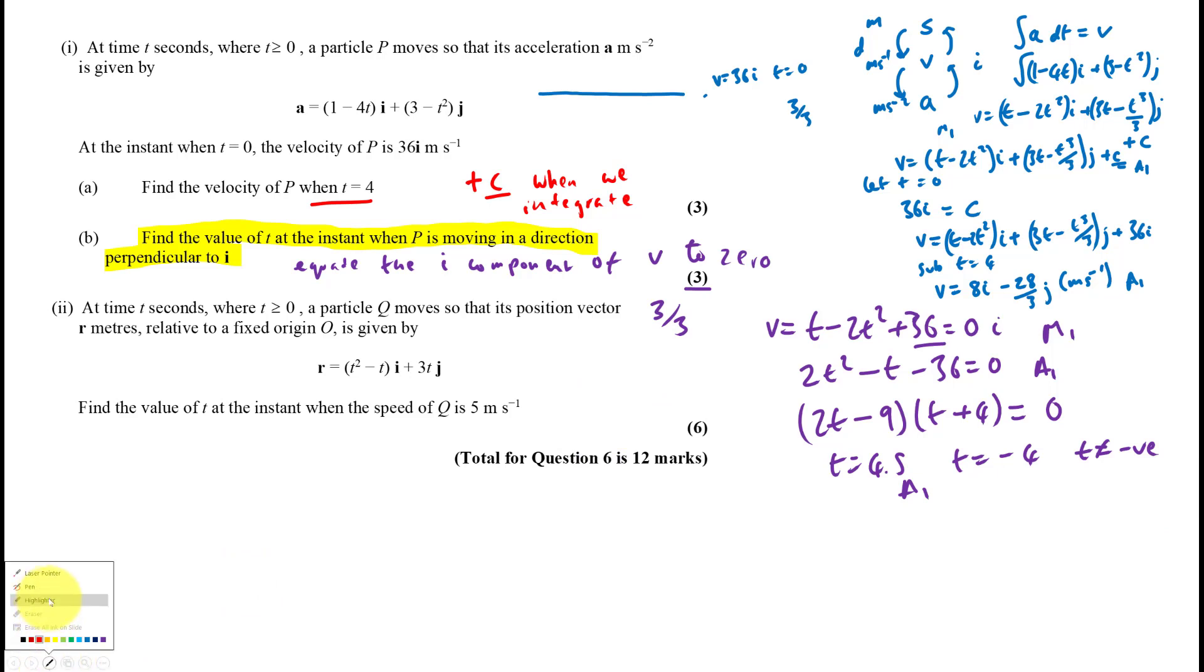Now year 13, I really want to highlight to you that you can all get 12 out of 12 for this question. And if you, this is the only thing you do on your mechanics paper that you ace, this is already equivalent to a grade D on your mechanics paper. So it's really vital that you understand these skills so that you can do it. So at time t seconds where t is greater or equal to zero, that's up here as well. A particle q moves so that its position vector r meters relative to fixed origin O is given by this. R. So r is its displacement. Find the value of t at the instant when the speed of q is 5 meters per second. So find the value of t, that's the time.